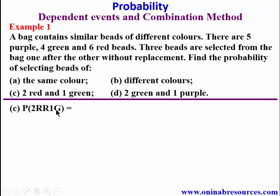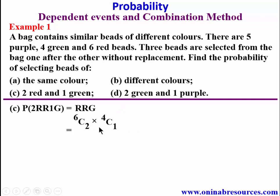For part c, we are looking for the probability of selecting three beads comprising two red and one green. We select two red from the six red beads and one from the four green beads. Using the combination method it is 6C2 times 4C1, and note the subscripts add up to three, all over 15C3.